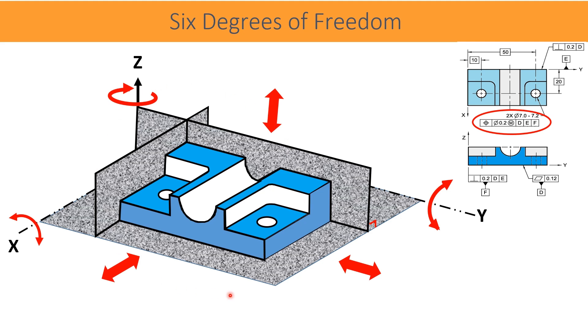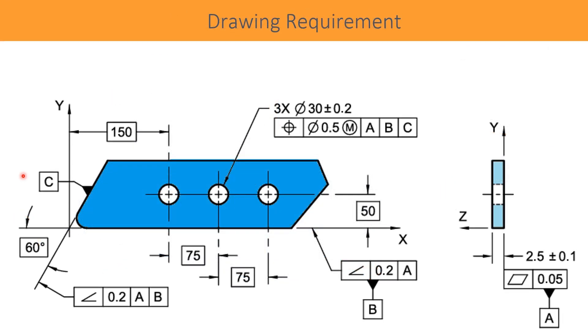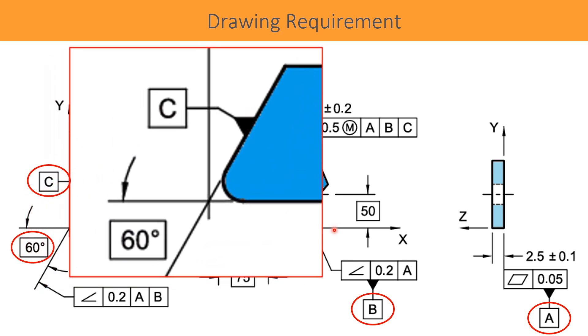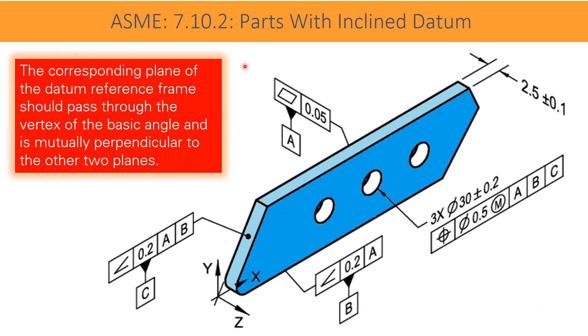Now observe this drawing where datum C plane is not perpendicular to the primary datum A and secondary datum B. It is making an angle 60 degrees basic with datum plane B. But we know in Cartesian coordinate system all three axes X, Y, and Z must be perpendicular to each other. The corresponding plane of the datum reference frame should pass through the vertex of the basic angle and mutually perpendicular to the other two planes.